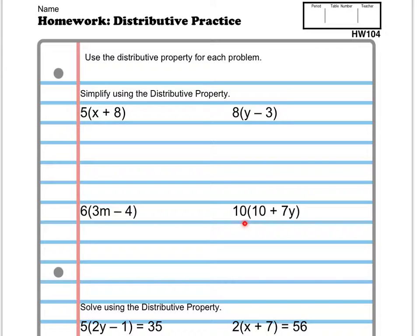Basically, we have 10 times the quantity of 10 plus 7y. Okay, again, this says simplify because it's an expression. There's no equal sign. It doesn't equal anything.